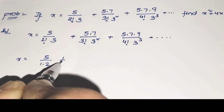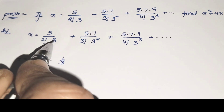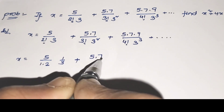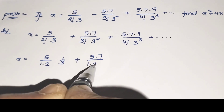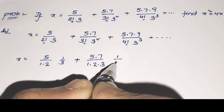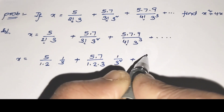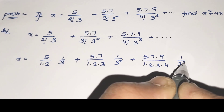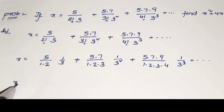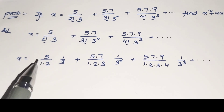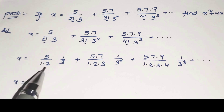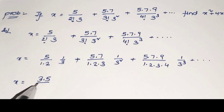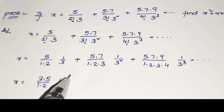This is the given series. First, take the simplification of the given series. Writing this value: 2 factors is nothing but 1/(1×2). Writing 3 as 1/3, plus 5×7, which is 3 factors, nothing but 1/(1×2×3), into this value equals (1/3)². The next value is 5×7×9 divided by 4 factorial, equal to 1/(1×2×3×4), and the next value is (1/3)³. I am applying the multiplier 3 here in the numerator and denominator.